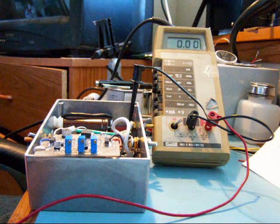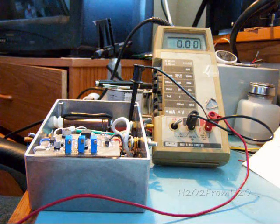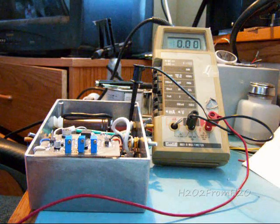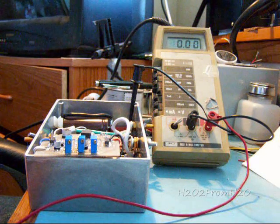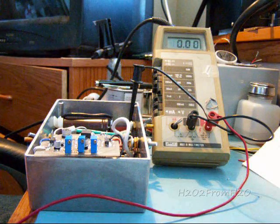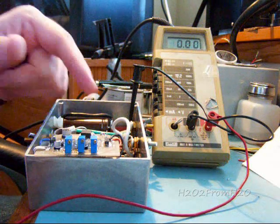So you'll run your ground to your ground and you'll run the positive lead from the battery to a 10 ohm resistor. On the other side of the 10 ohm resistor, you'll run that to your positive input on your board.